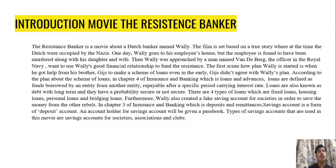Furthermore, Wally also created a fixed saving account for societies in order to save money from other rebels. In Chapter 3 of Insurance and Banking, which covers Deposits and Remittances, a saving account is a form of deposit account. An account holder for a saving account will be given a passbook. The type of saving account used in this movie is saving accounts for societies, associations and clubs.